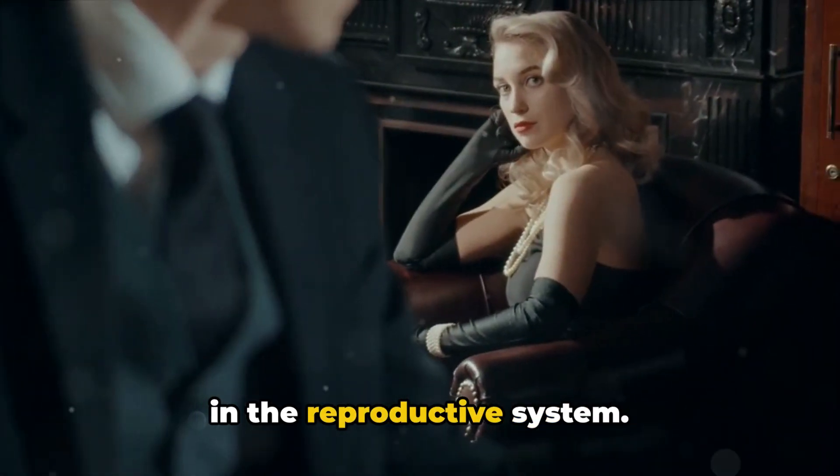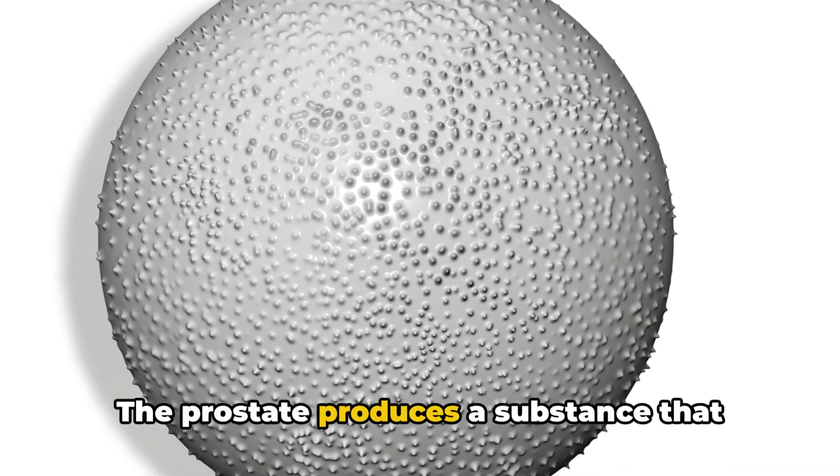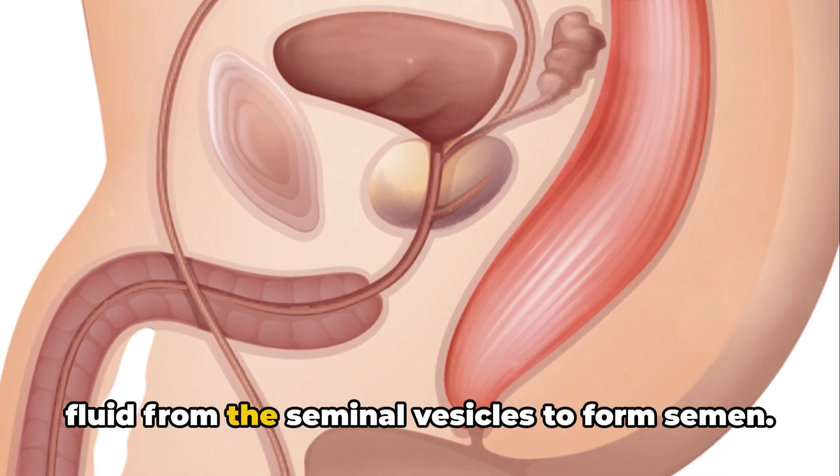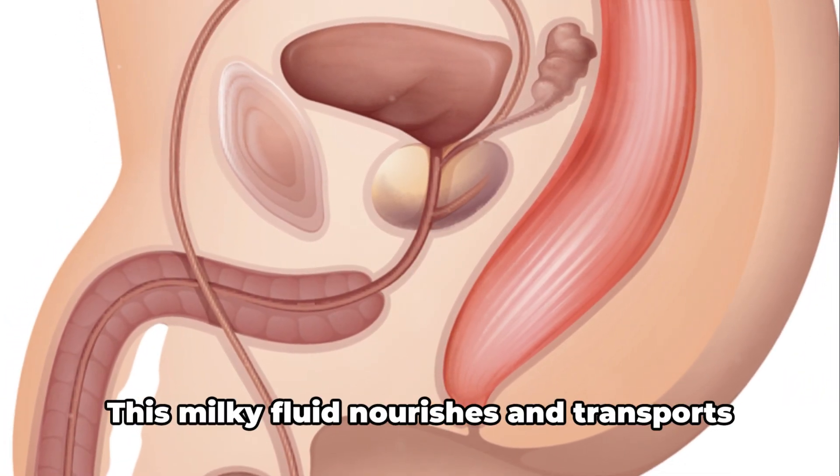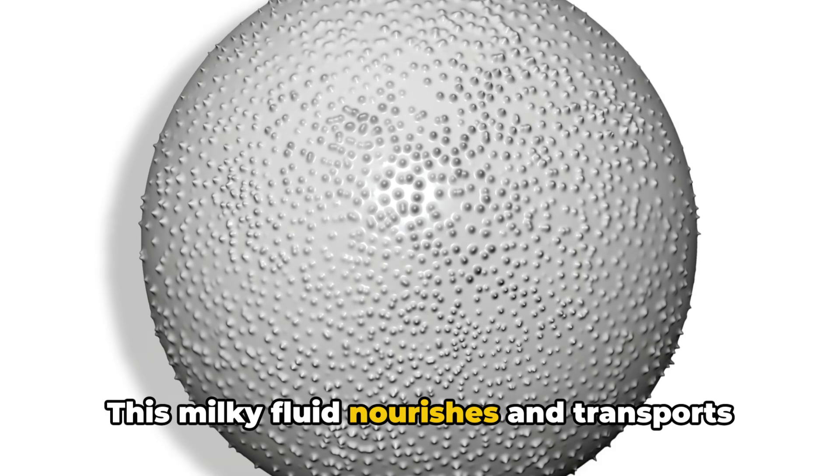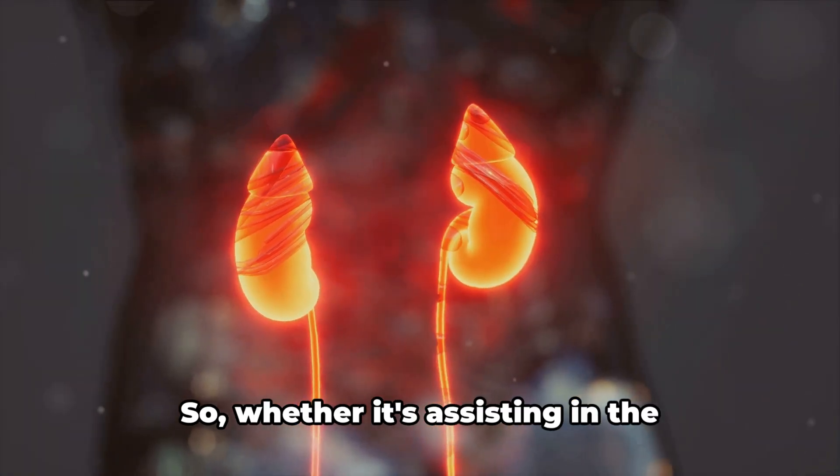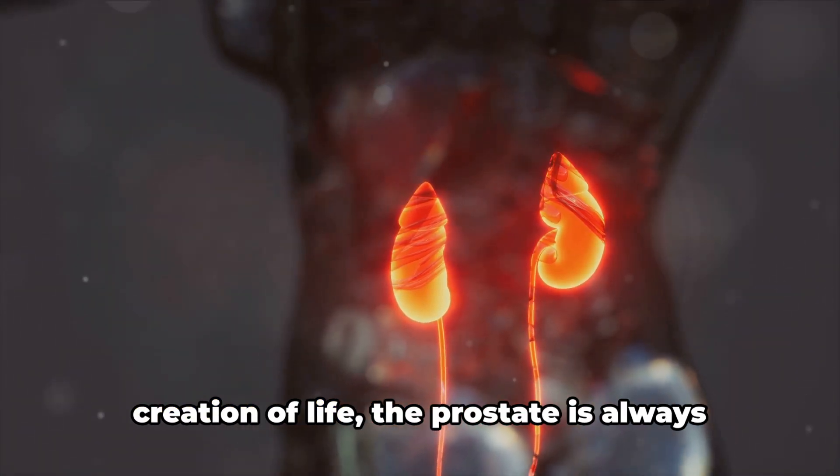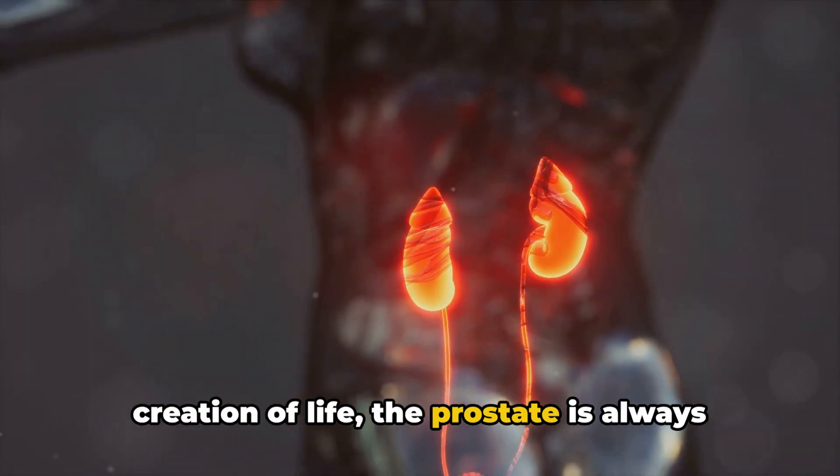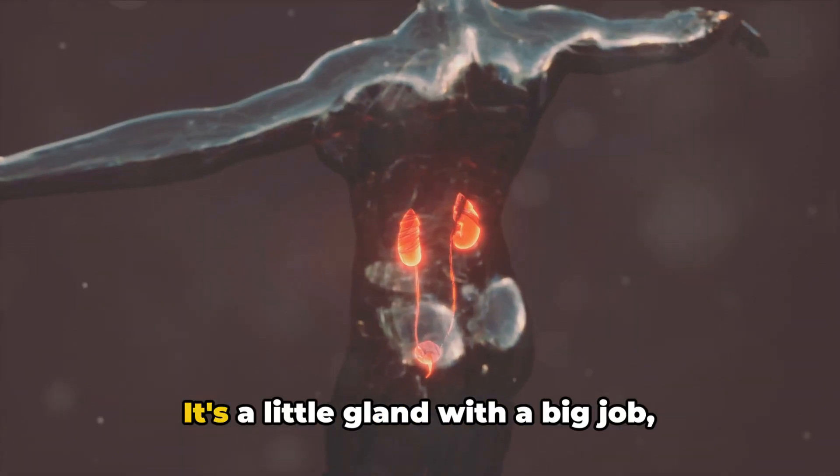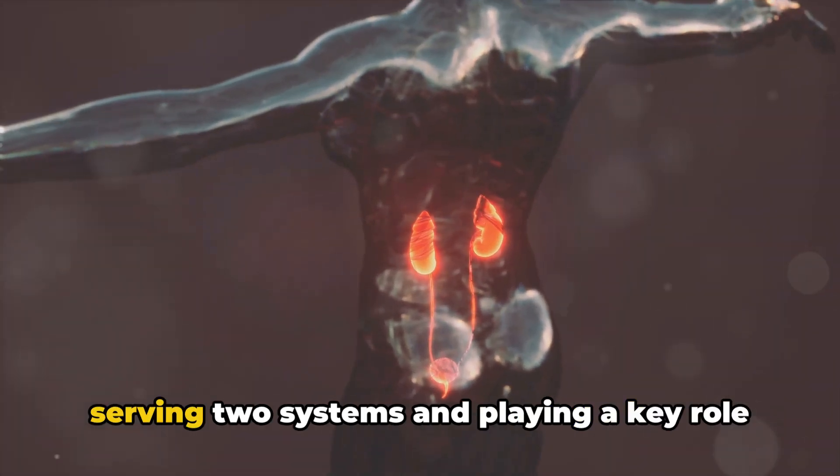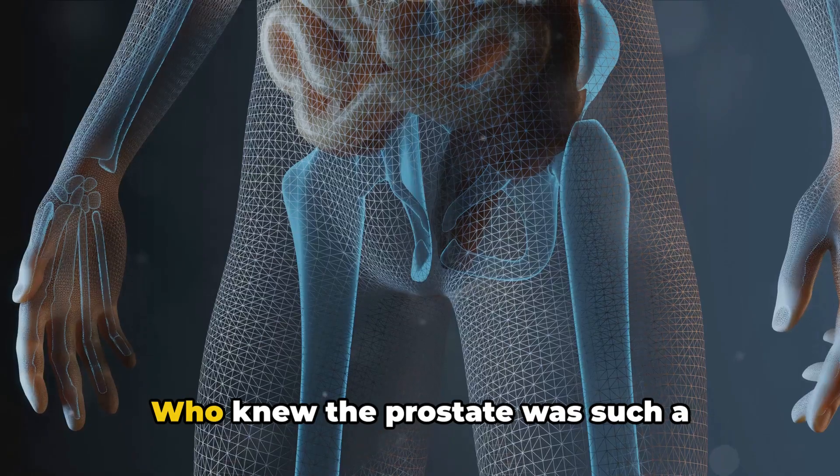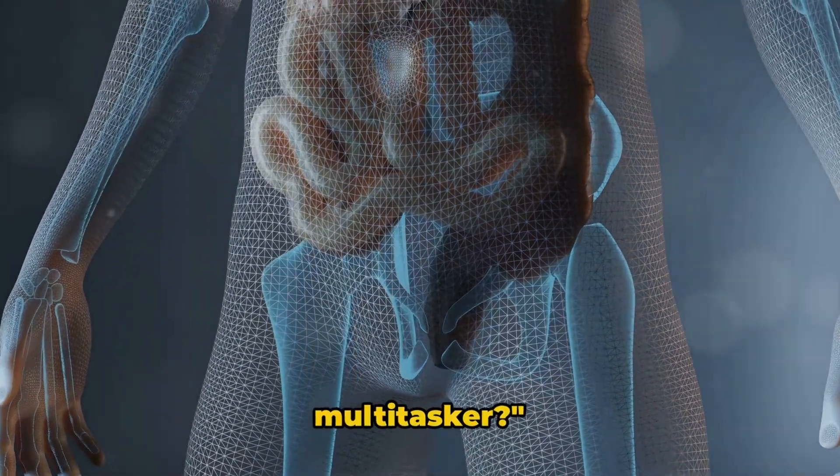On the other hand, it plays a vital role in the reproductive system. The prostate produces a substance that combines with sperm from the testes and fluid from the seminal vesicles to form semen. This milky fluid nourishes and transports sperm during ejaculation. So whether it's assisting in the elimination of waste or aiding in the creation of life, the prostate is always hard at work. It's a little gland with a big job, serving two systems and playing a key role in both urinary function and reproduction. Who knew the prostate was such a multitasker?